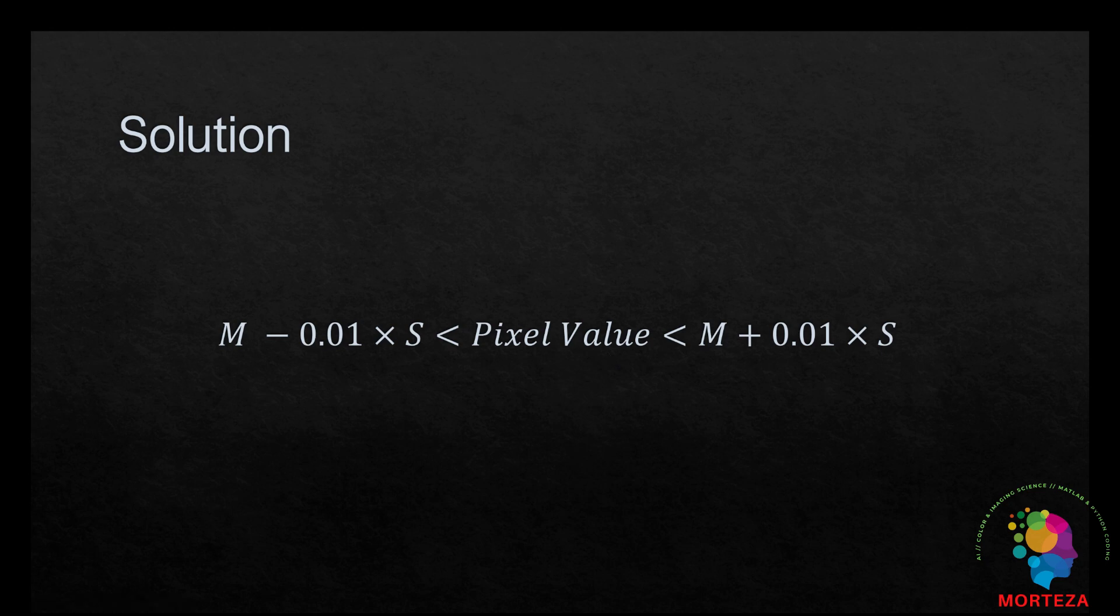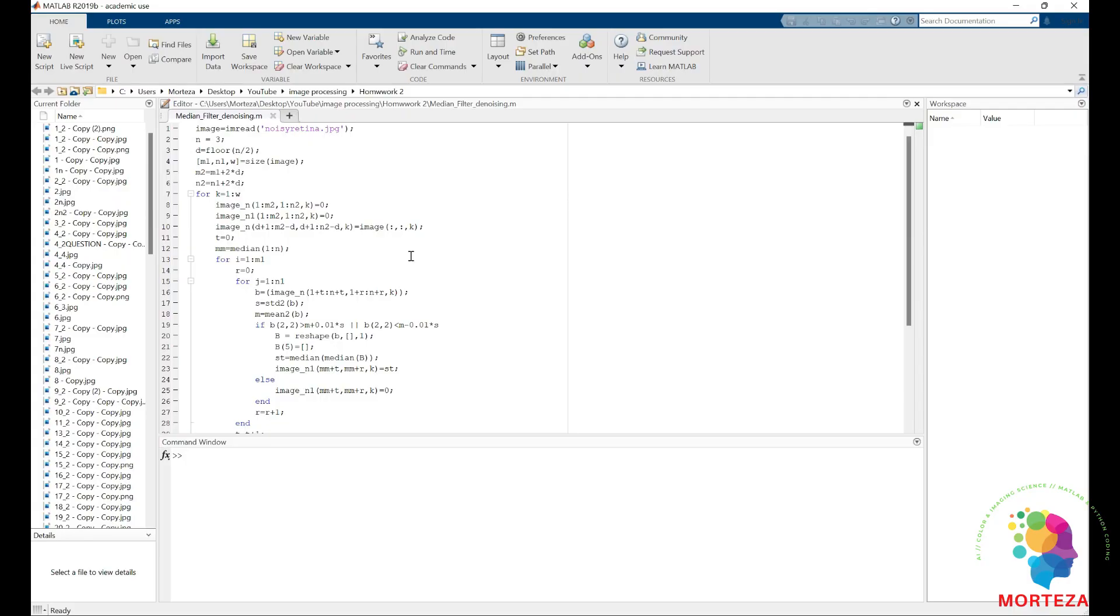Now, let's also have a look at the code in MATLAB. So this is the code for median filter denoising in an adaptive way so that the image would not be blurred.